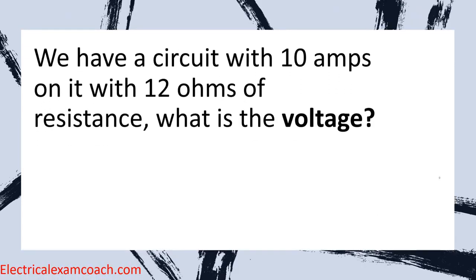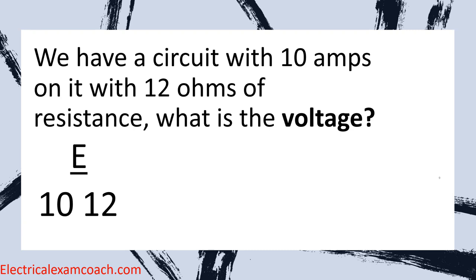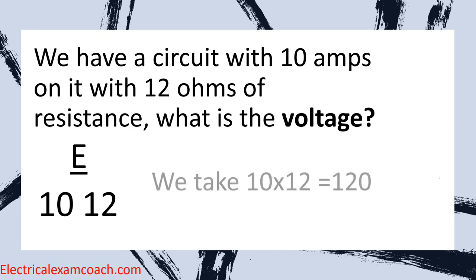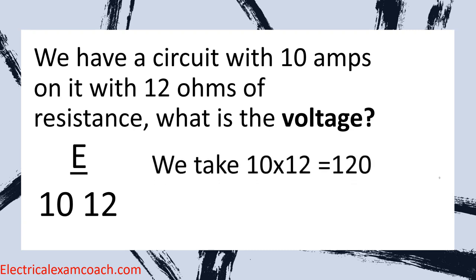Finally, we have a circuit with 10 amps on it and 12 ohms of resistance. What is the voltage? We plug in what we know — we're solving for E with 10 amps and 12 ohms. We follow our Ohm's Law pyramid and multiply: 10 multiplied by 12 equals 120. So E equals 120 volts.